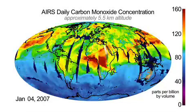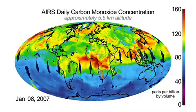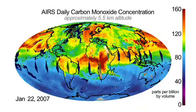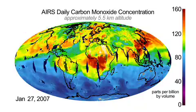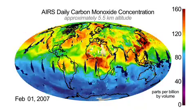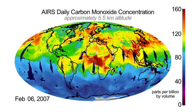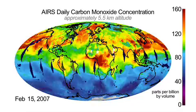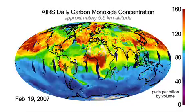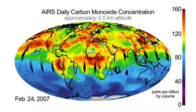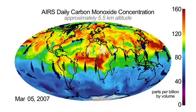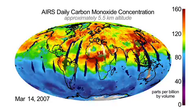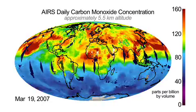Each day, AIRS makes 324,000 observations with a subsatellite pixel size of approximately 45 km. Typically, more than 50–70% of these observations yield high-quality carbon monoxide retrievals.